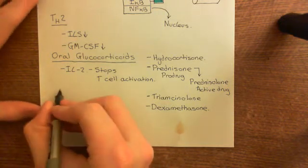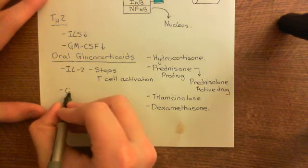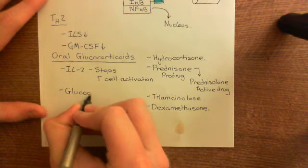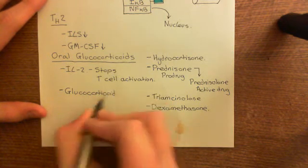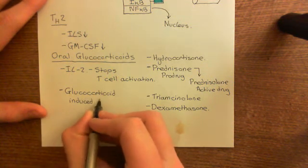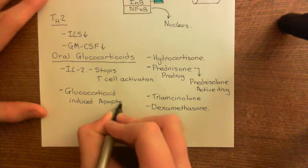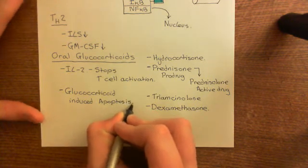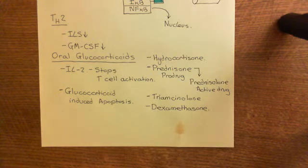Glucocorticoids also go into B cells as well as T cells and induce something known as glucocorticoid-induced apoptosis — a very poorly understood phenomenon. They go into lymphocytes, both T lymphocytes and B lymphocytes, and cause them to apoptose. Basically, these glucocorticoids are going to purge out your memory B cells and also your memory T cells against this allergen.